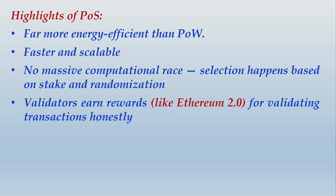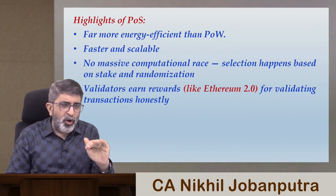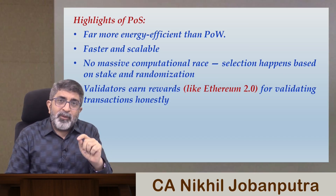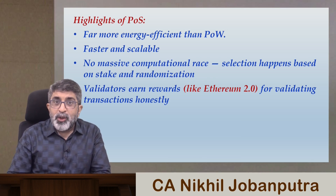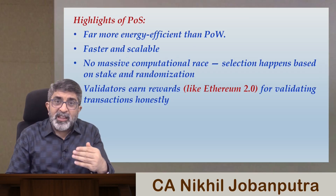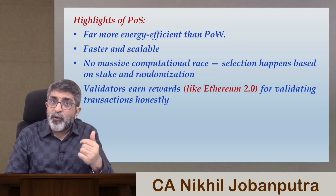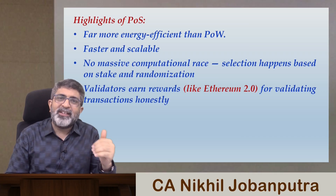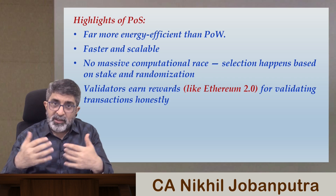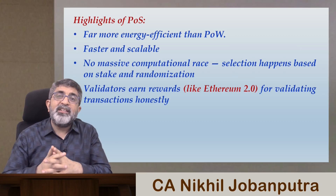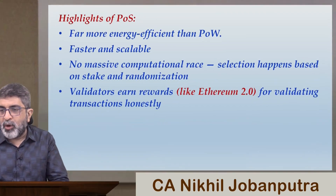Highlights of POS: far more energy efficient than POW, faster and scalable, no massive computational race, and selection happens based on stake and randomization. Validators earn rewards like Ethereum 2.0 for validating transactions honestly. If the primary reward for miners was in the form of Bitcoin or similar cryptocurrencies, the reward for validators is in the form of Ethereum 2.0. Validators are rewarded for proof of stake, and they are expected to do the work honestly because they are the major stakeholders in the system.